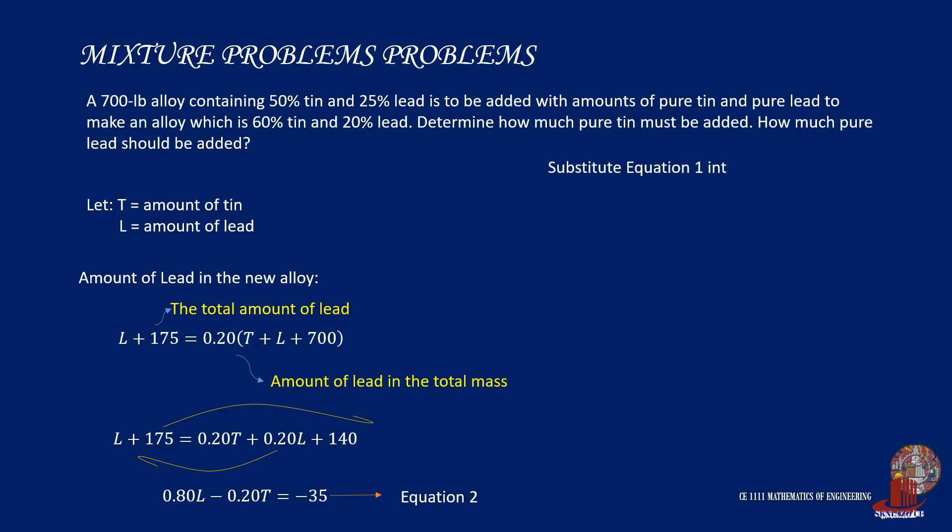By substituting equation 1 into equation 2, we have 0.8L minus 0.2 times 1.5L plus 175 equals negative 35. Expanding the terms, we arrive at 0.5L minus 35 equals negative 35. After rearranging, we come up with lead amount equal to 0.